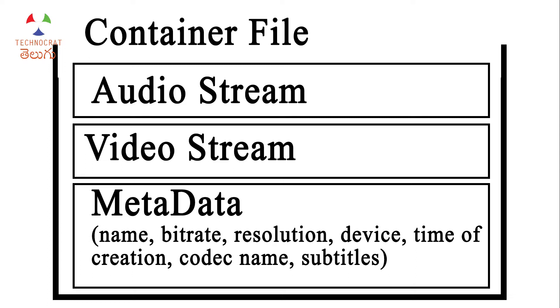Metadata is the data that is related to the file. We have the name of the file, the video bitrate, the resolution — 720p or 1080p — all of which will be described in the metadata.